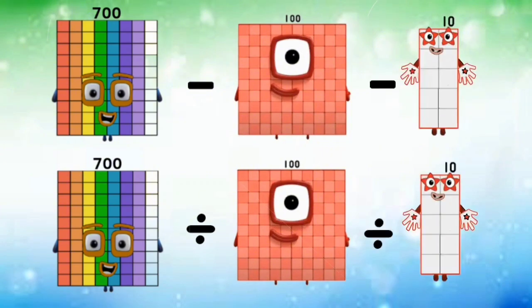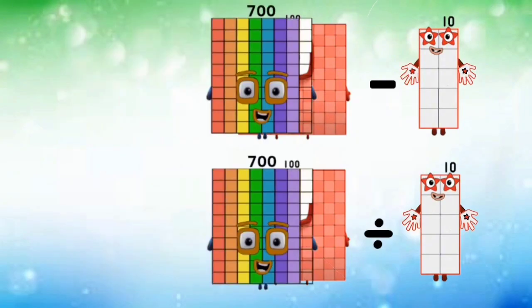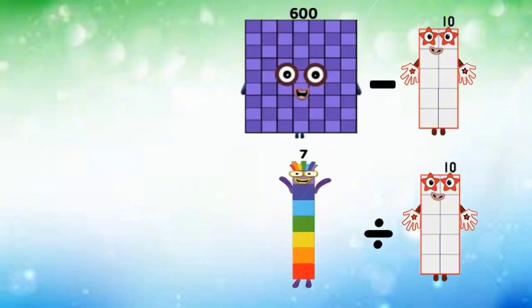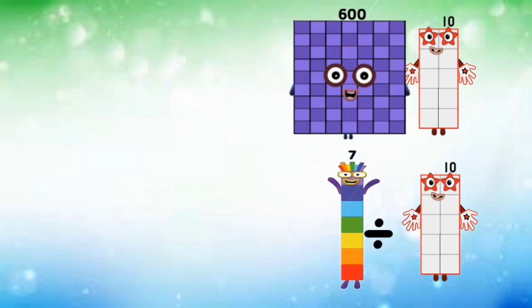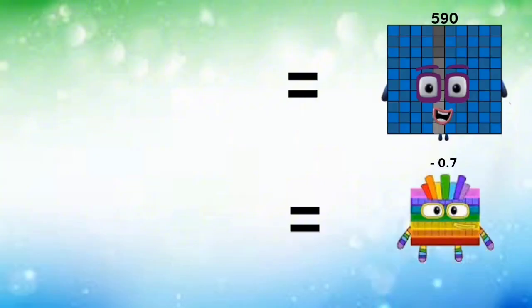700 subtracted and divided by 100 equals 607. 600 minus 10 and 7 divided by 10 equals 590 and negative 0.7.